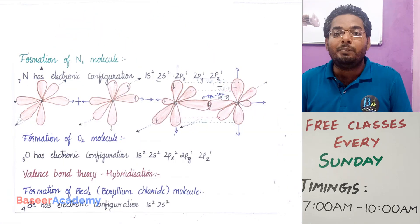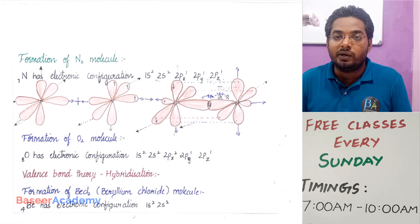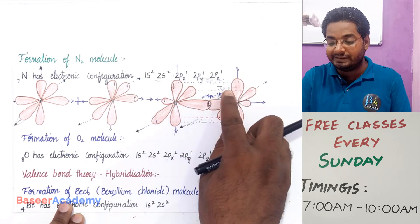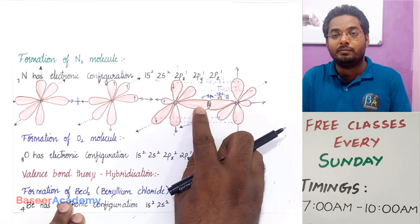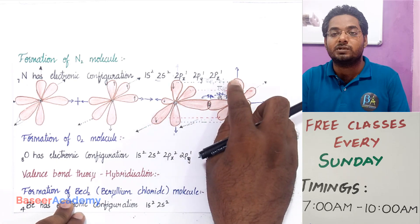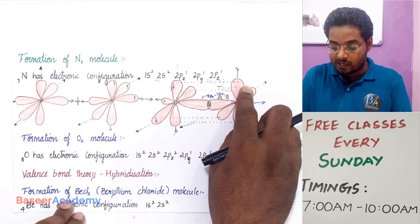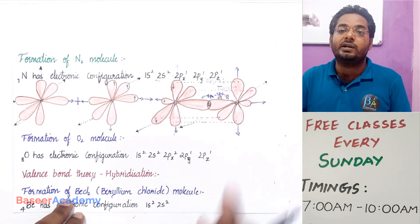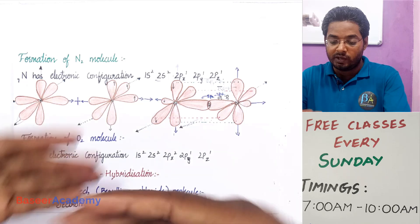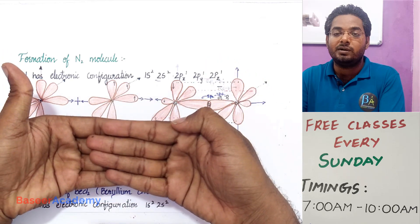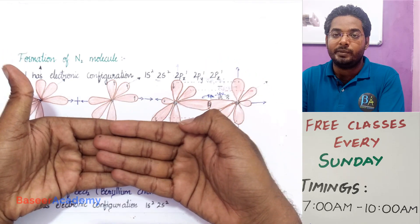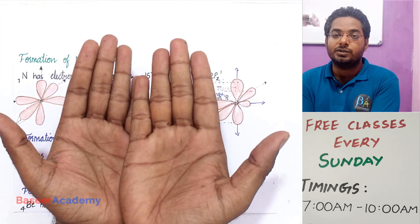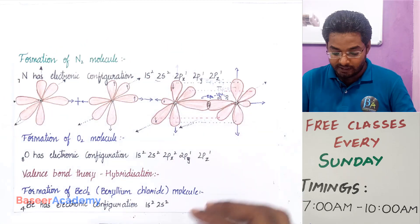Always remember: only unpaired electrons take part in bonding. Nitrogen has three unpaired electrons so it forms three bonds — one sigma bond and two pi bonds. Oxygen has two unpaired electrons so it forms two bonds. The first bond is a sigma bond formed by end-to-end overlap of orbitals, and the second bond is a pi bond formed by side-to-side overlap of orbitals.